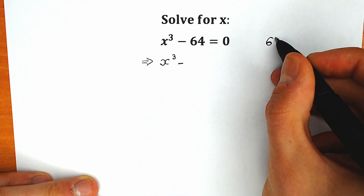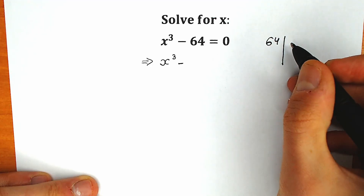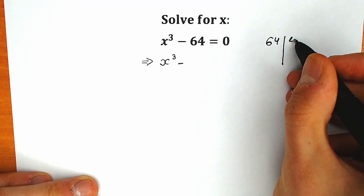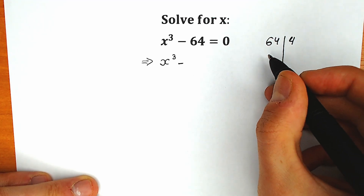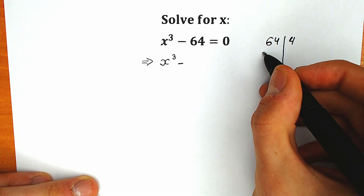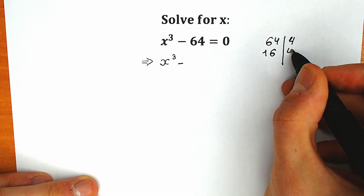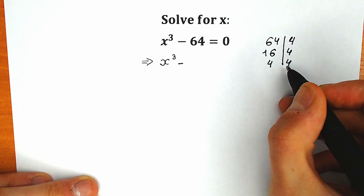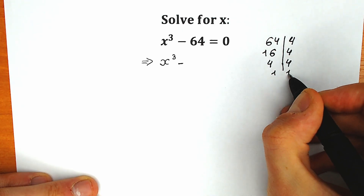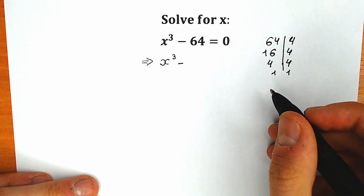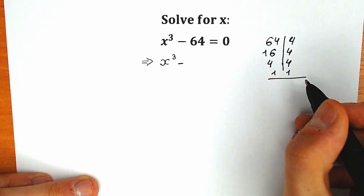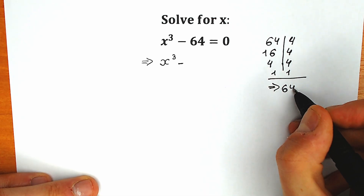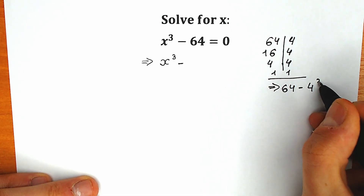We have 64 on the right side. First of all we can divide it by 4 — so we get 16. We can divide it once more by 4, so we have 4. We can divide it by 4 again, so we have 1. So this 64 can be written as 4 times 4 times 4.